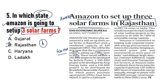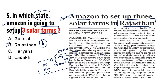In 420 MW mein se teen farms hain — ek 210 megawatt ka, ek 100 megawatt ka, aur teesra alag. Teeno alag-alag solar farms hain, Amazon ke under alag-alag project companies. Yeh sab isliye ho raha hai kyunki net-zero India 2070 tak ka promise hai, aur companies renewable energy ki taraf yogdan de rahi hain.